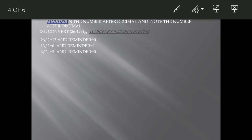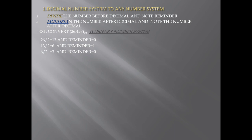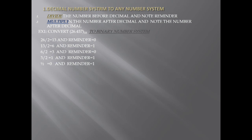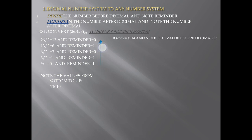Next, 6 ÷ 2 = 3, remainder 0. Then 3 is divided further, and 1 ÷ 2 = 0, remainder 1. Now note the values from bottom to top: 1, 1, 0, 1, 0. So the binary integer part is 11010.